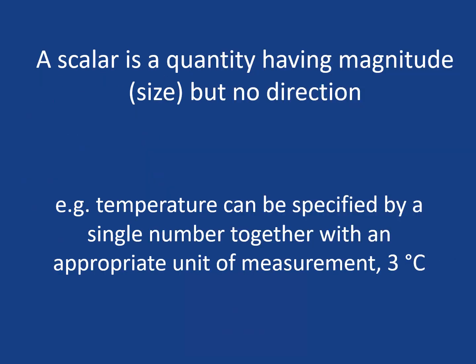Now a scalar is simple. It's a quantity that has magnitude but no direction. So for example, in chemistry and physics, it might be a temperature — three degrees Celsius, for example.